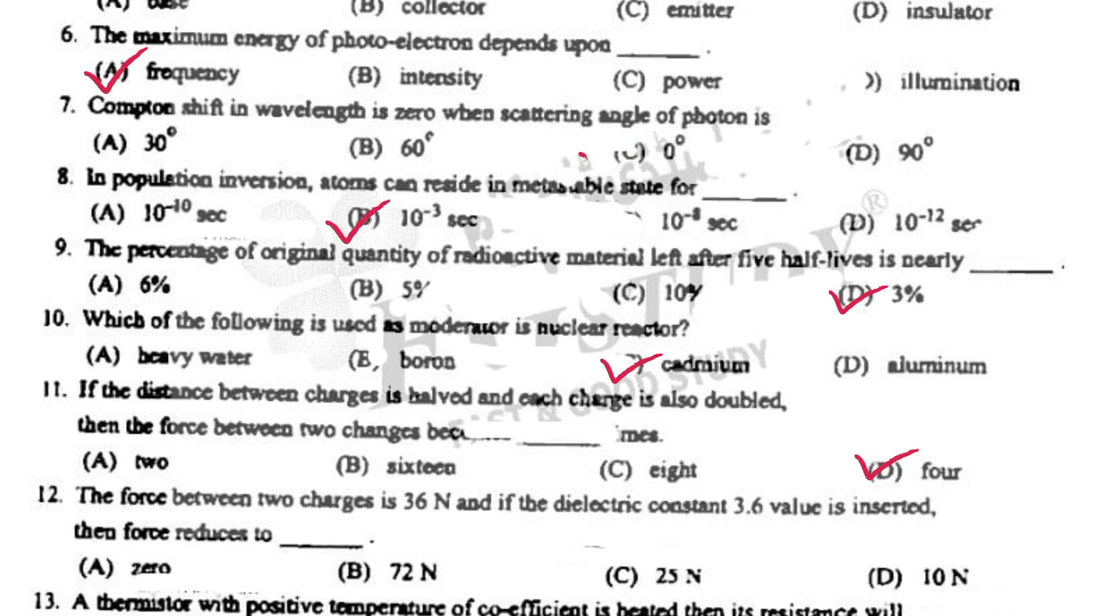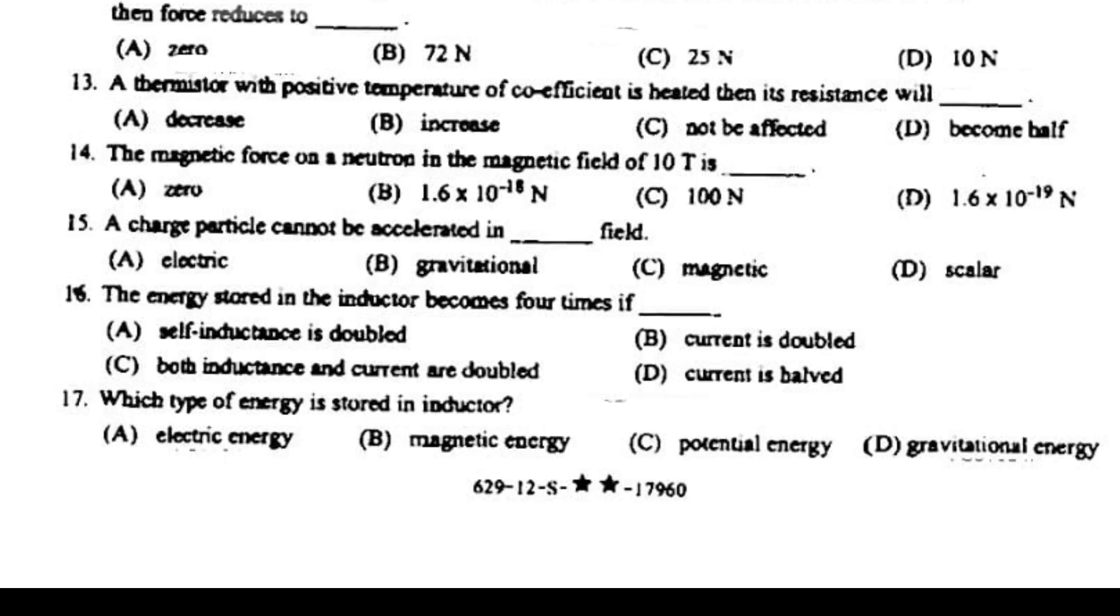The force between two charges is 36 N. And if the dielectric constant 3.6 value is inserted, then force is reduced to 10 N. A thermistor with positive temperature coefficient is heated, then its resistance will increase.